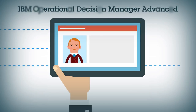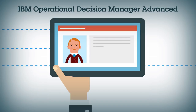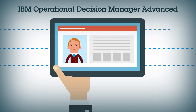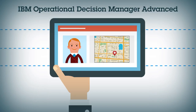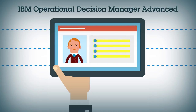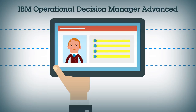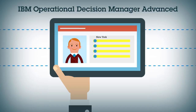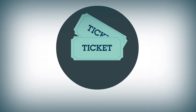Behind the scenes, IBM Operational Decision Manager Advanced was able to collect and analyze location and historical data to choose an offer that would best resonate with George and Sarah. It identified that George is in New York, he recently bought tickets for another show, and he hasn't received similar offers recently.